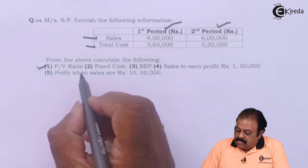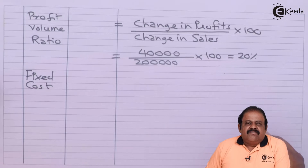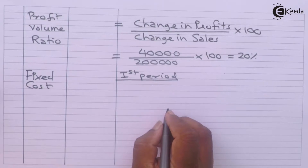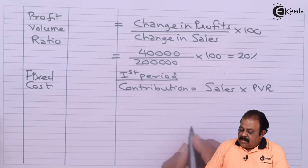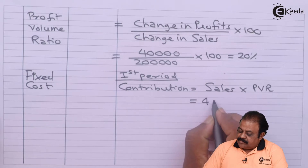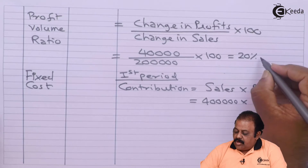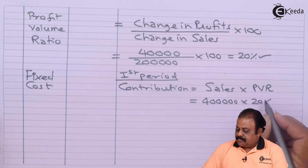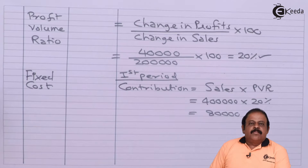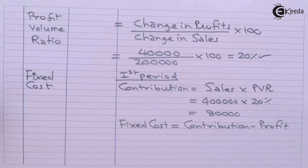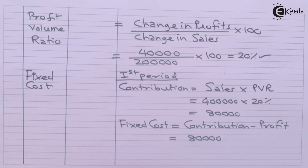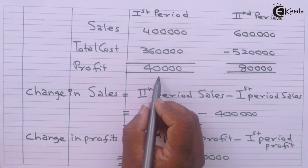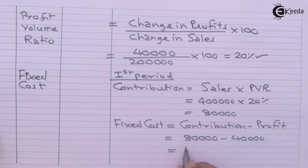To find fixed cost, we calculate contribution in the first period. Contribution equals sales multiplied by PV ratio: four lakhs multiplied by twenty percent equals eighty thousand. Fixed cost equals contribution minus profit: eighty thousand minus forty thousand equals forty thousand. So the fixed cost is rupees forty thousand.